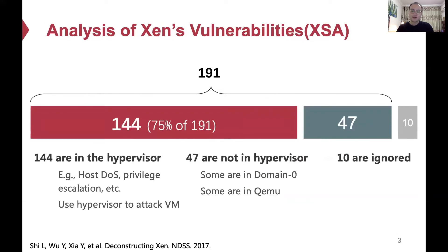A study published in NDSS '17 systematically analyzes 201 Xen vulnerabilities. 144 of them are related to the core part of the hypervisor and can be exploited by attackers to escalate their privilege and attack other viewers.